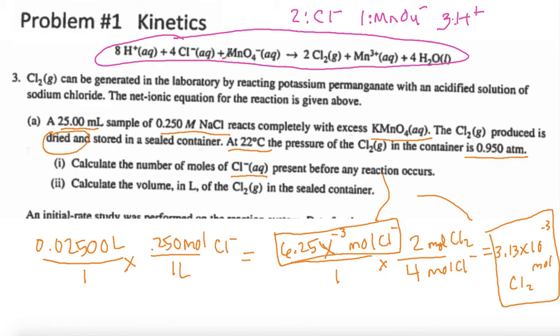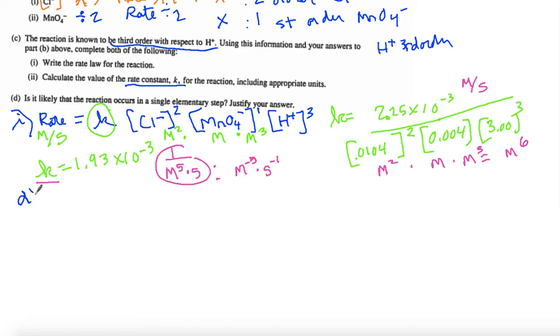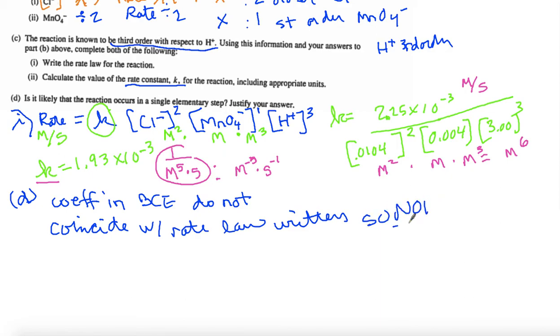Do these numbers coincide with the coefficients in the balanced chemical equation? Because if they do, then it is an elementary step. They do not. You see, the numbers do not coincide. This is twice that. This MnO4- is, but the other two are not. So, the first thing we can say, the coefficients do not coincide with rate law written. So, not an elementary step.